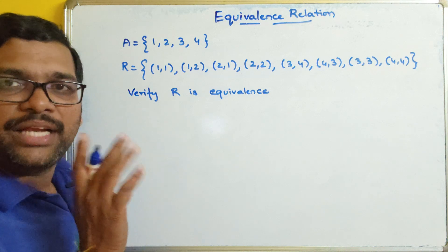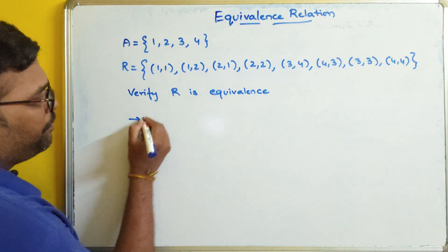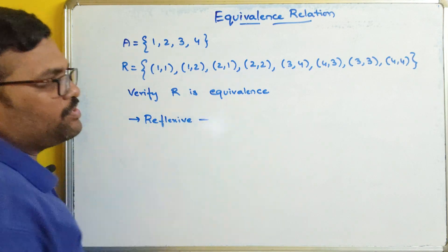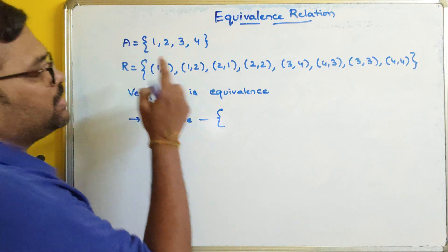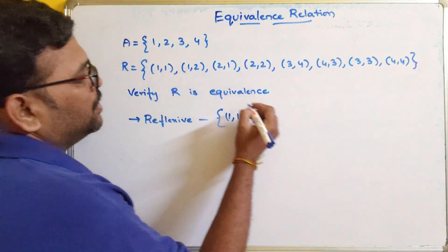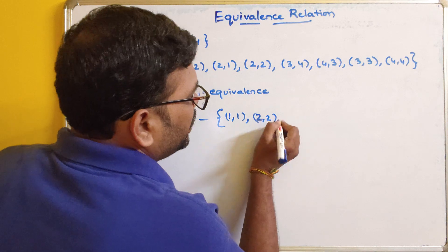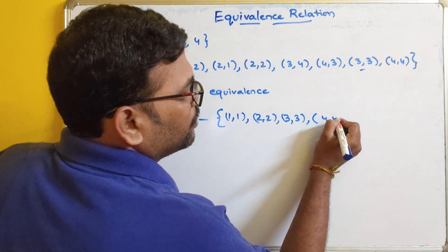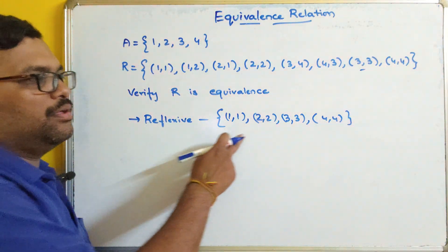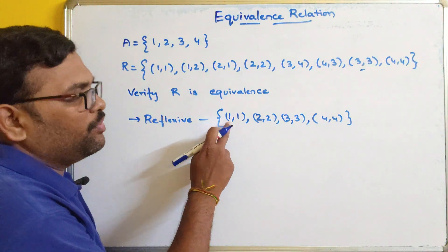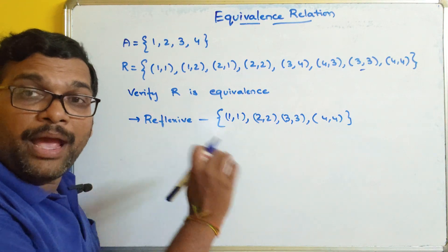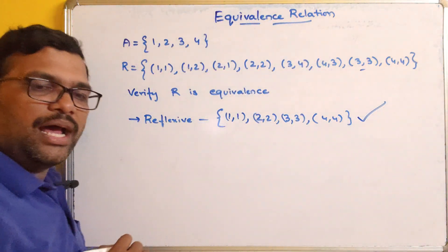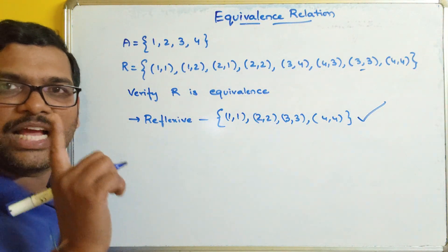We have seen it should satisfy the reflexive property first. Let us check whether it is reflexive or not. So, (1,1) — yes. Similarly (2,2) — yes. (3,3) — yes. And (4,4). So if every element is mapped with the same element, that is reflexive. Yes, this relation R is reflexive. The first property has been satisfied.